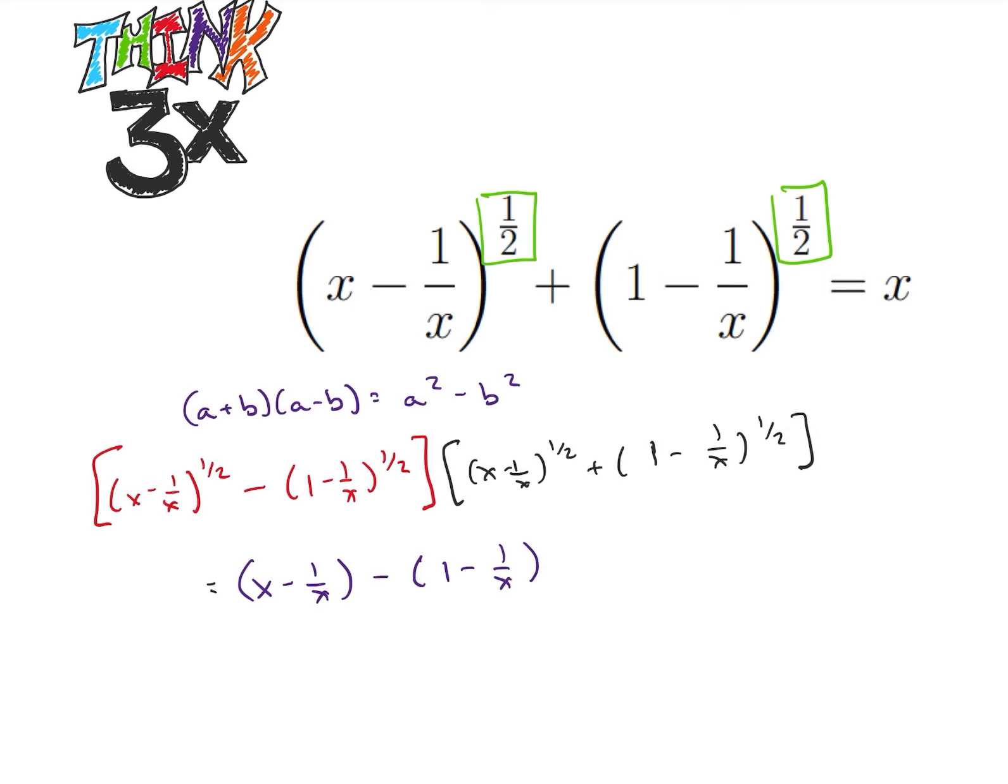Okay, so this is actually going to come out to, after we do some cancellation, just x minus 1. Alright, so I have something that's a little bit nicer on the left, but now my thing on the right is a little bit ugly. So what I have now is from the right side, I would have x times x minus 1 over x to the 1 half minus 1 minus 1 over x to the 1 half. And that would be equal to x minus 1.